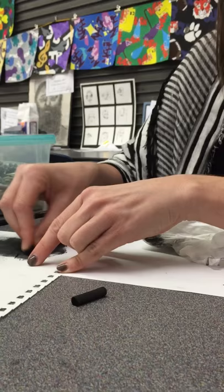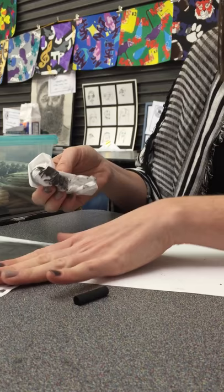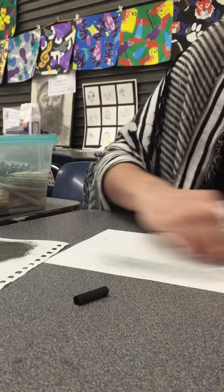Okay, so you rub it all over the scrap piece and then you're gonna take your tissue, you rub it on there just to pick up some of that charcoal pigment and you're gonna just rub it all over your piece of paper just to get a little base layer down.